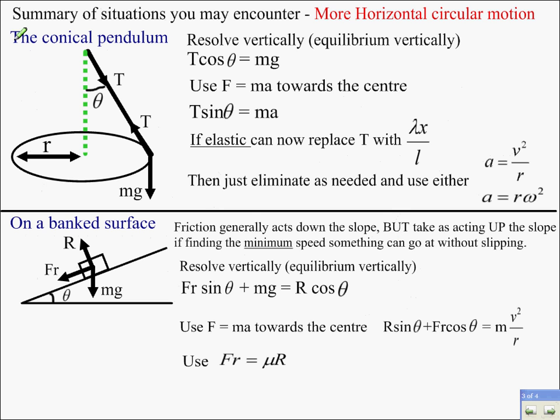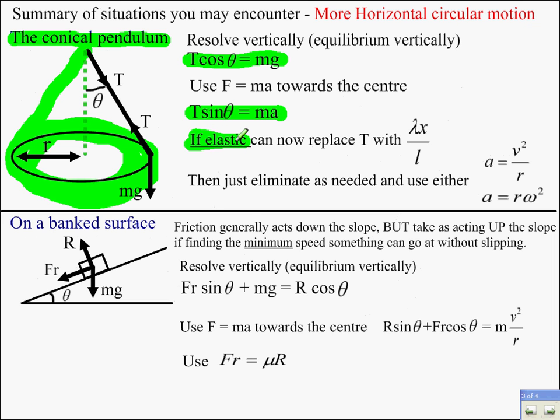More horizontal circular motion. This is called a conical pendulum because it rotates horizontally. It kind of makes a cone with the strings here and has the pendulum effect of going back and forth if you look at it from the side. Again, resolve vertically because the particle is not moving anywhere vertically. It's only going round in a horizontal circle. So, you resolve vertically. Use F equals ma towards the centre. If it's elastic, you can now replace T with λX over L. If it's not, you would just utilise these equations. Obviously, you can use different versions of a, depending on what the question tells you.